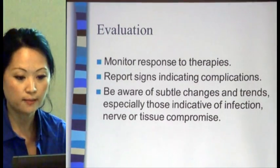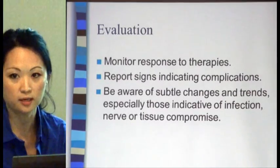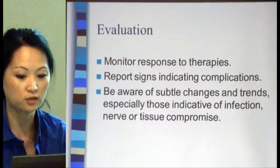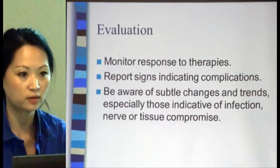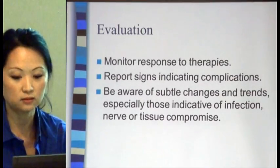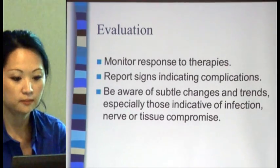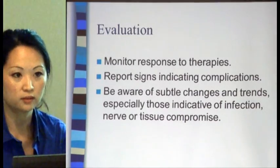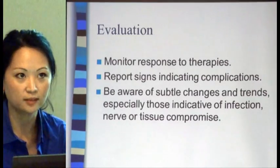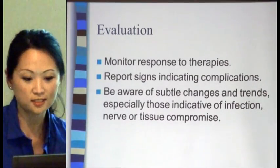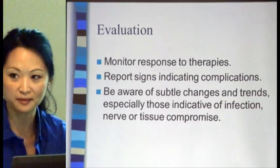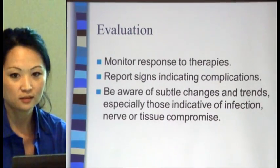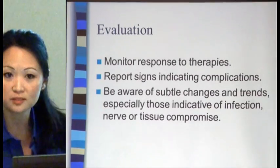For evaluation, monitor how well patients are responding to therapies. Always report any signs of complications, check your five P's, and make sure they don't have compartment syndrome. Be aware of any subtle changes or trends — the last thing you want is for the limb to be compromised. Sometimes in the trauma room you don't think about the extremities because you're focused on the brain or abdomen. That's musculoskeletal trauma.